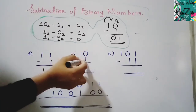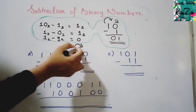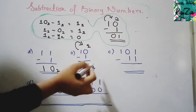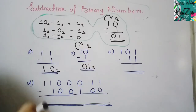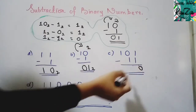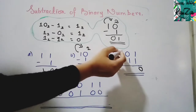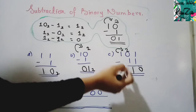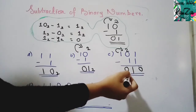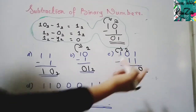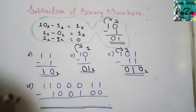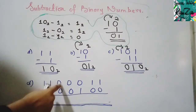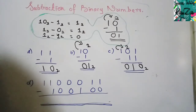Applying the subtraction rules: 1−1 = 0. Then 0−1 is not possible, so we carry — it becomes 2, and 2−1 = 1. Let's work through a longer example where 0−1 requires borrowing from further left. In this kind of problem you need to be careful when carrying from previous columns.